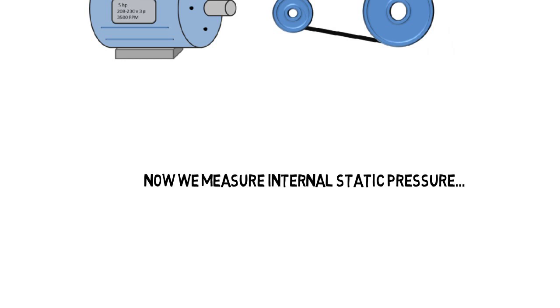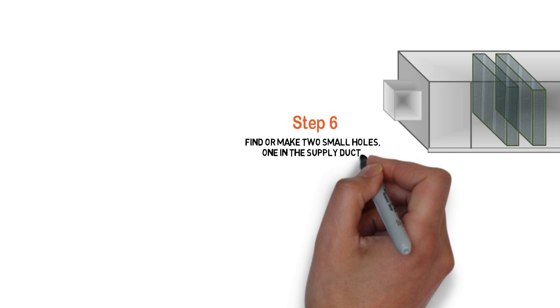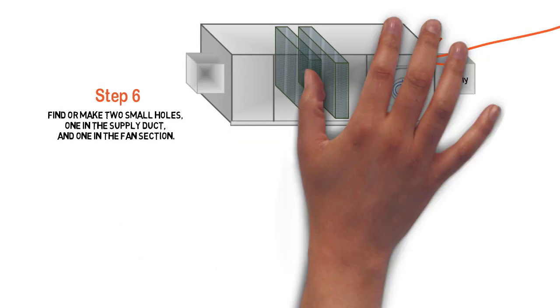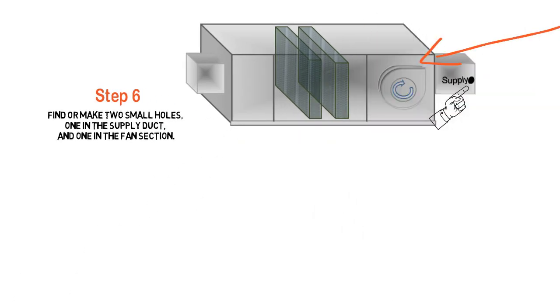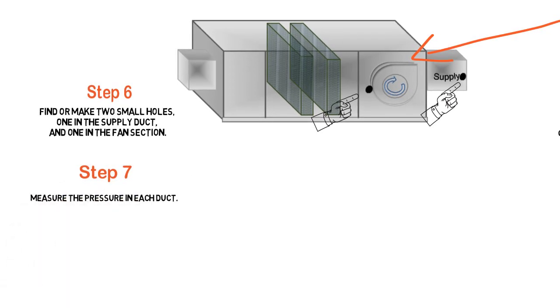Now we're going to measure some internal static pressures. Find or make two small holes, one in the supply duct and one in the return section. Note, one is in the supply duct and one is in the return section of the unit, not the return duct work.